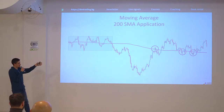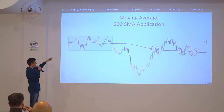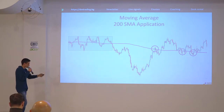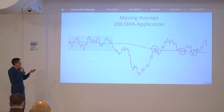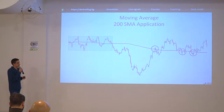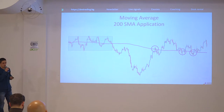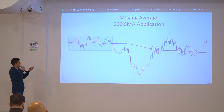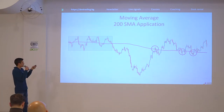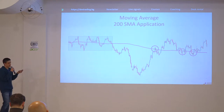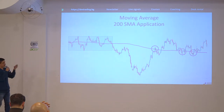Moving averages are also used to define trend, so when the moving average is looking flat like that, we're obviously having a range and it cannot be used — although there were some reactions inside, but those are two dangerous spots to go into. So in those cases the moving average is basically useless, even the 200 one.